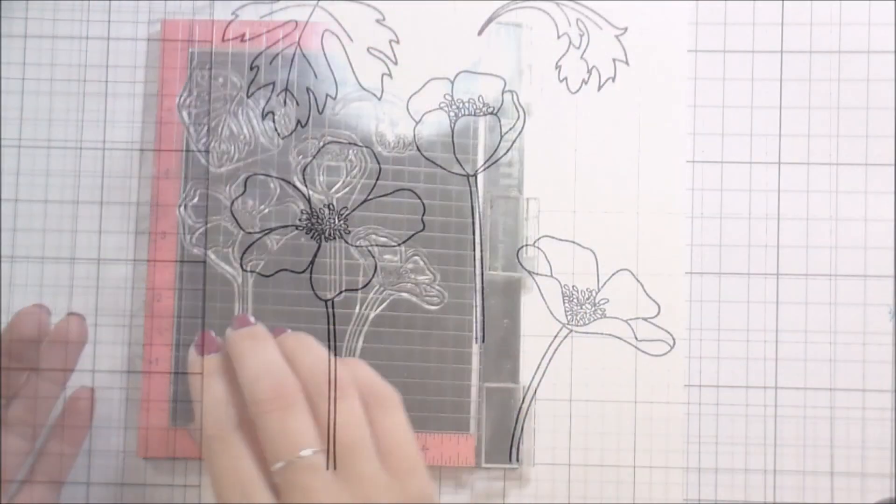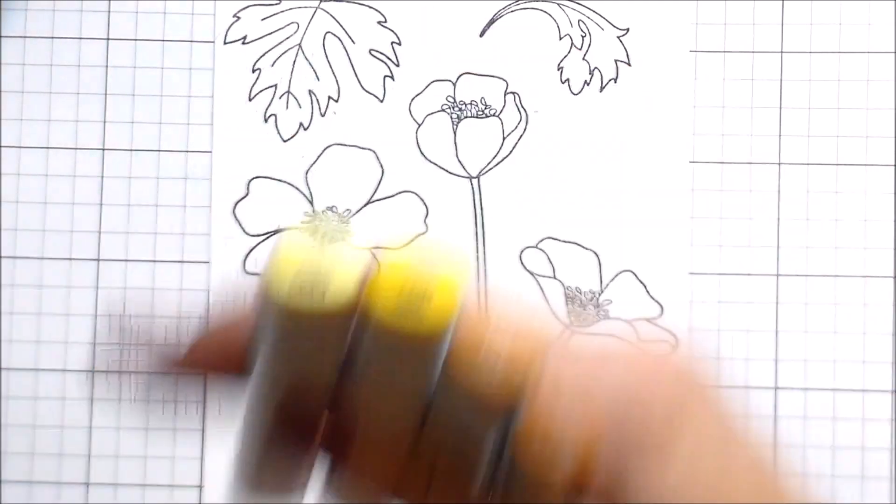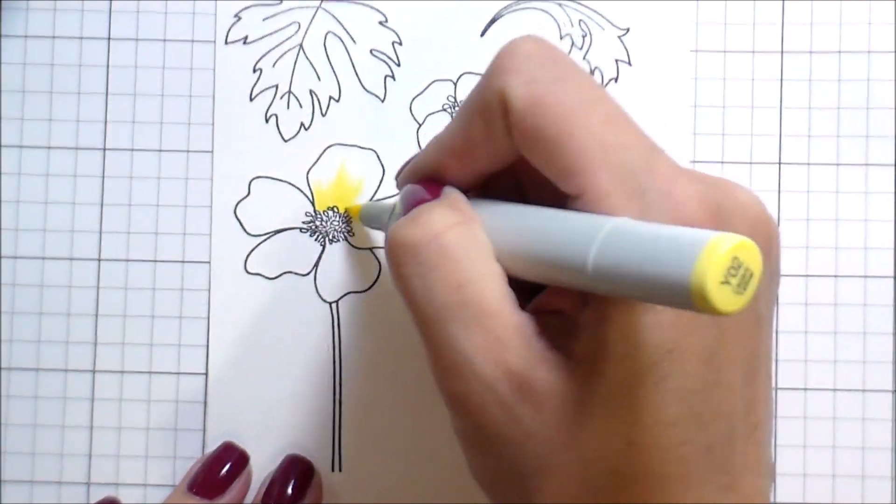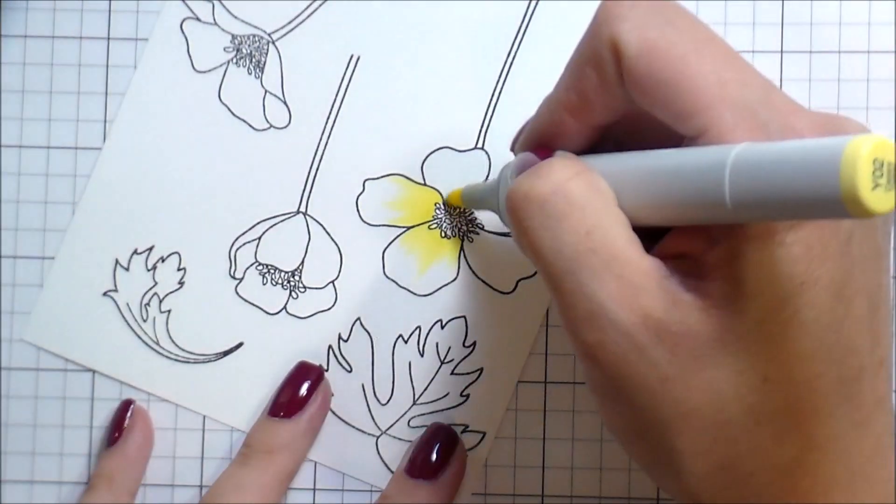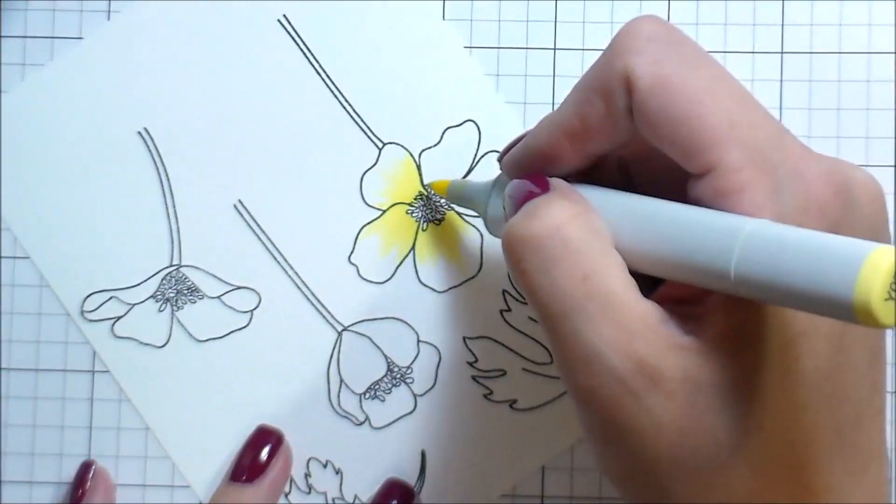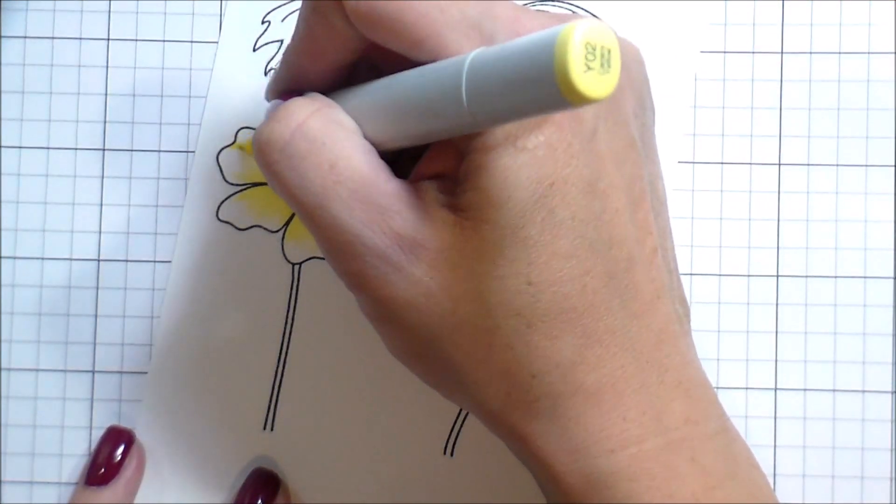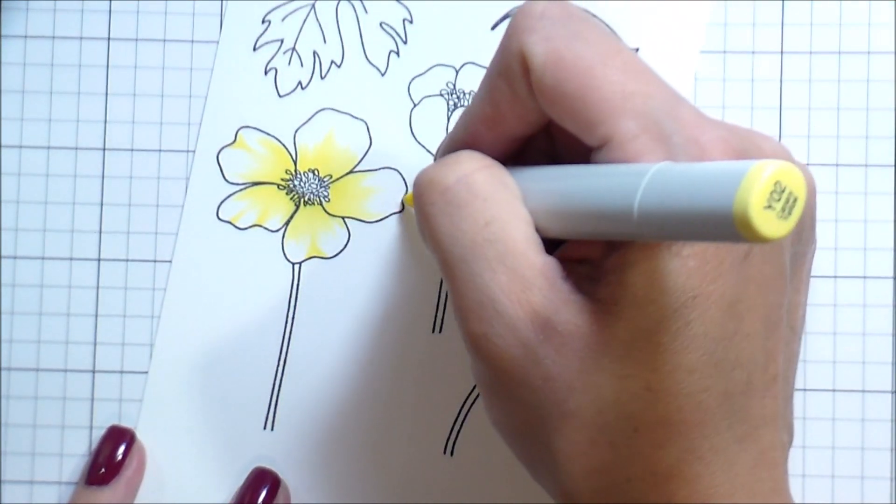Now we're getting right into the Copic coloring with yellow for the buttercups. I'm not one of those people who's always married to making sure that the flowers are the same color as they come in nature, but I already had the idea for a blue background and yellow complements that nicely.